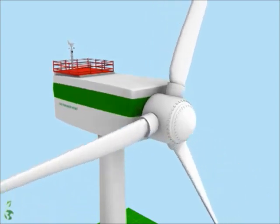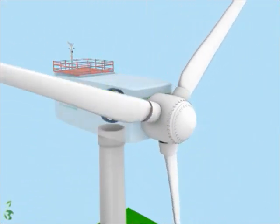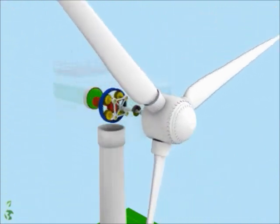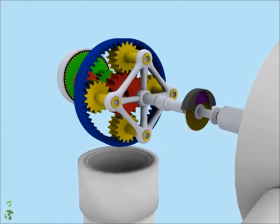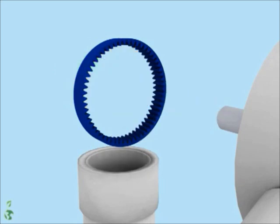The nacelle securely contains all necessary components to produce electricity. Usually, the gear box is used to increase the lower rotation speed of the hub to meet the technical requirements of the generator system. This wind turbine uses a planetary gearbox. The ring gear is fixed.